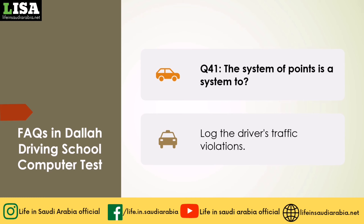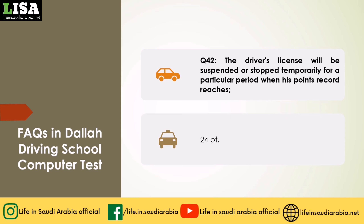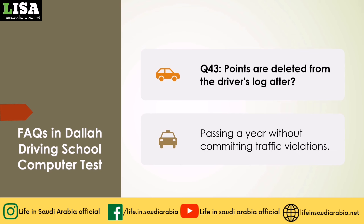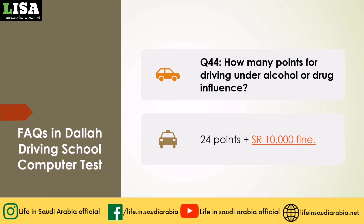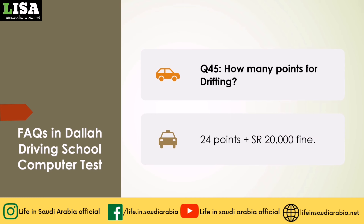Q41: The system of points is a system to? Answer: Log the driver's traffic violations. Q42: The driver's license will be suspended or stopped temporarily when his points record reaches? Answer: 24 points. Q43: Points are deleted from the driver's log after? Answer: Passing a year without committing traffic violations. Q44: How many points for driving under alcohol or drug influence? Answer: 24 points plus SAR 10,000 fine. Q45: How many points for drifting? Answer: 24 points plus SAR 20,000 fine.